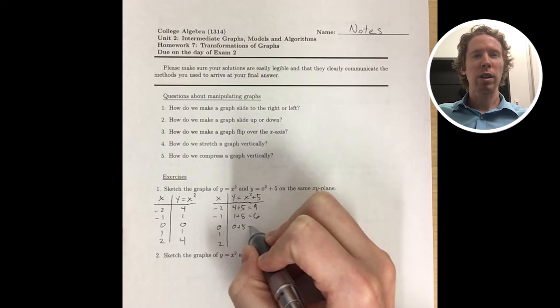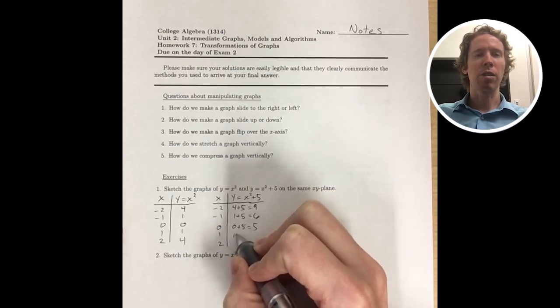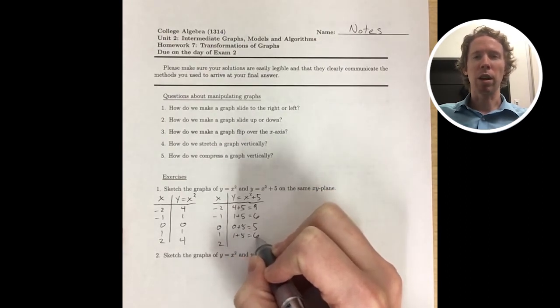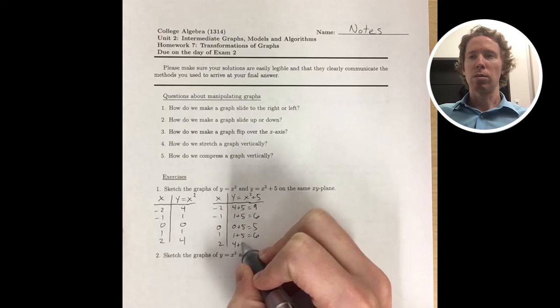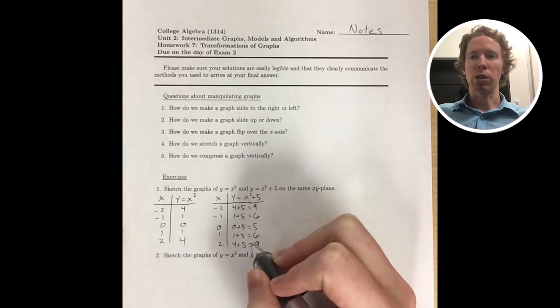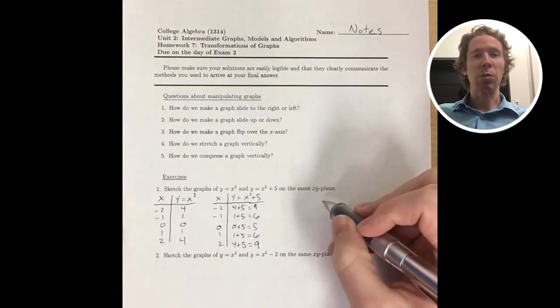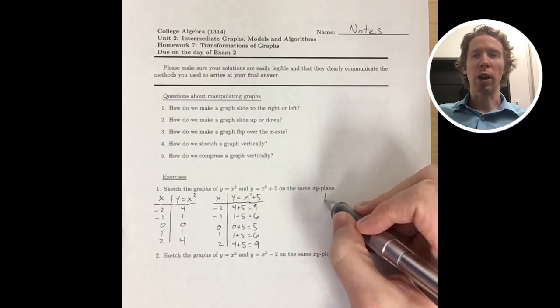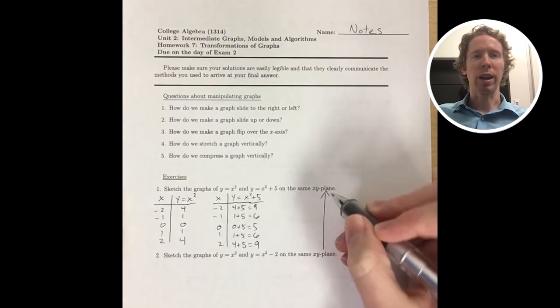And once I have these, I'm just asked to graph them on the same xy plane. So I'll graph the y equals x squared first, and then we'll see the relationship between y equals x squared and y equals x squared plus 5.